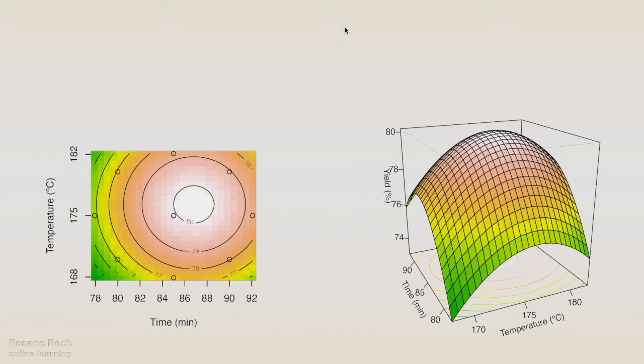The resulting plots are quite different from the ones we have been analyzing for linear models and interactions. Quadratic models can have a maximum, minimum, or saddle points.